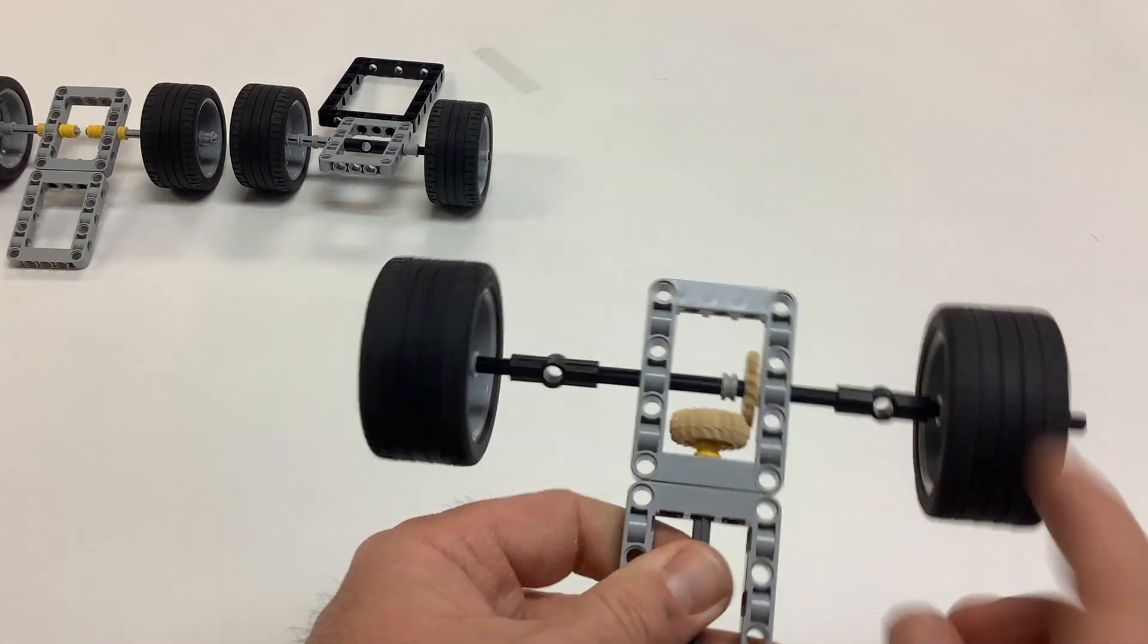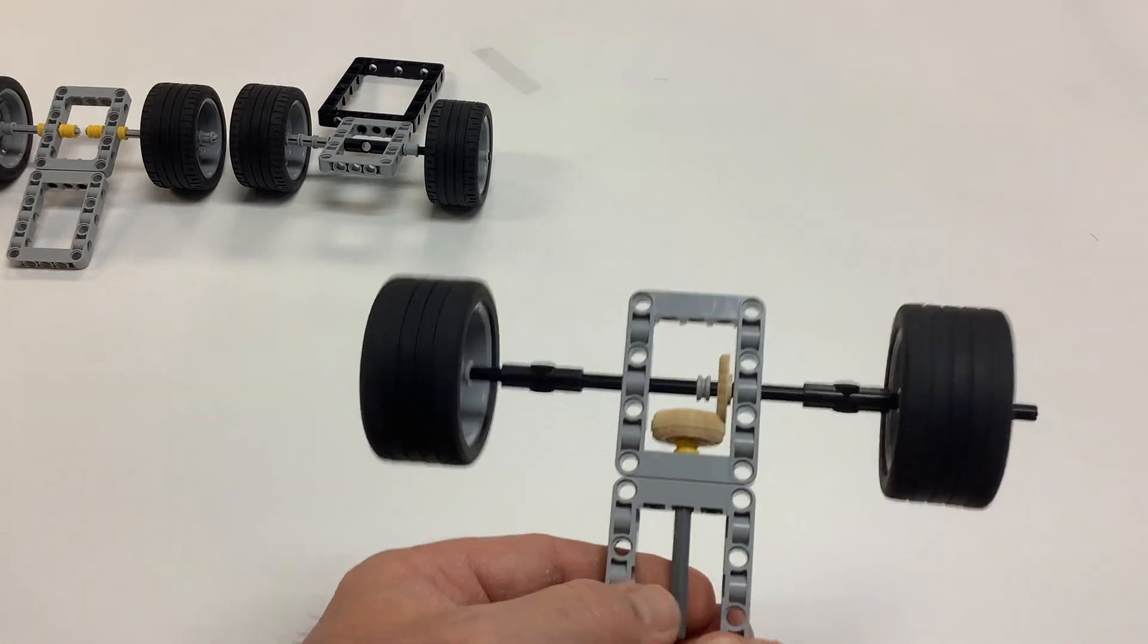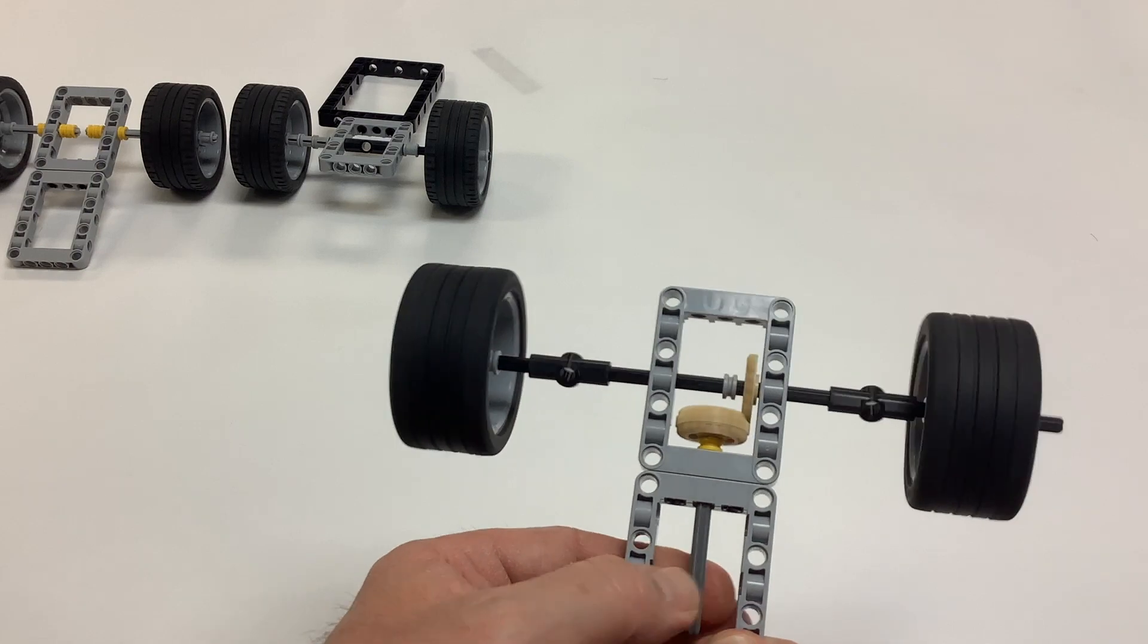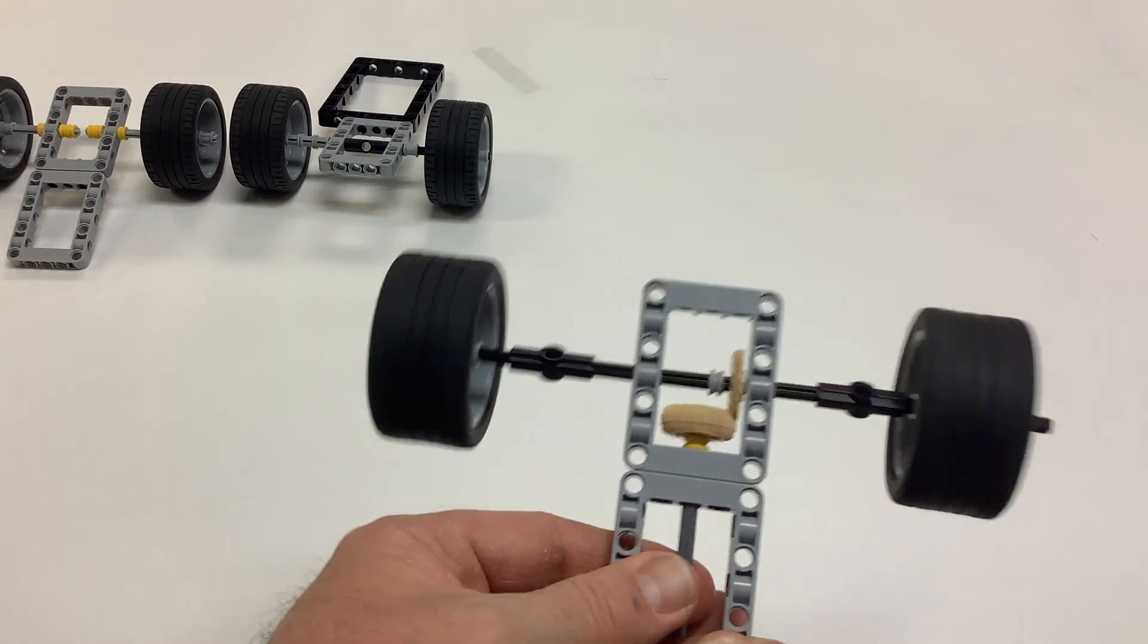This one's kind of wobbly over here, but the point is that you can see that they're both controlled by the shaft. You grab one, then they both stop.